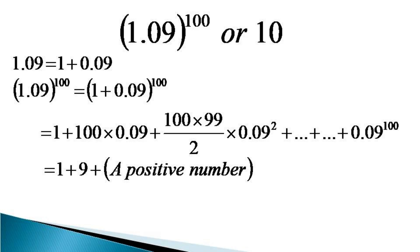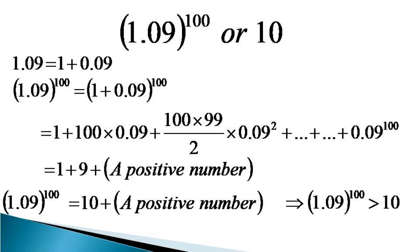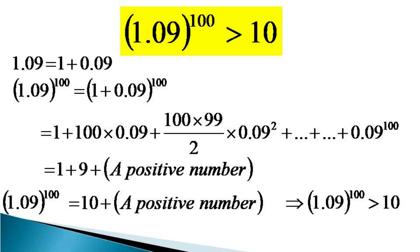And this can be expressed as being equal to 10 plus a positive number. That means that (1.09)^100 is obviously more than 10, and that's how we find that (1.09)^100 is bigger than 10.